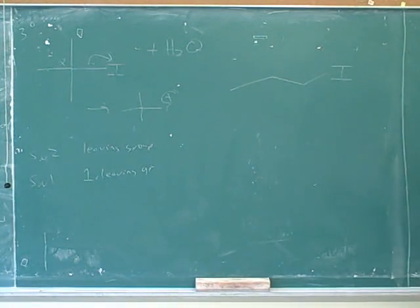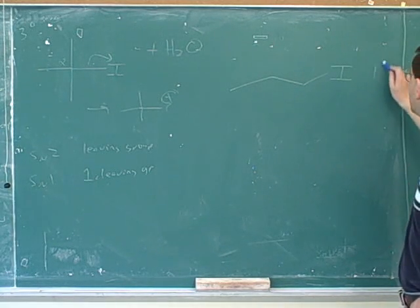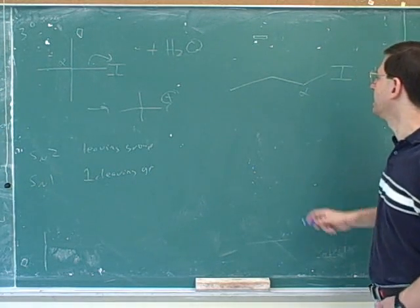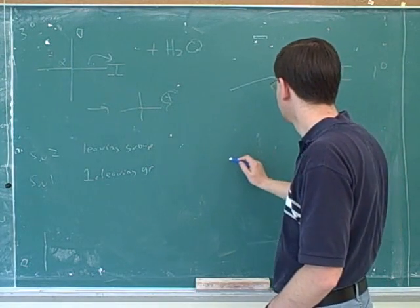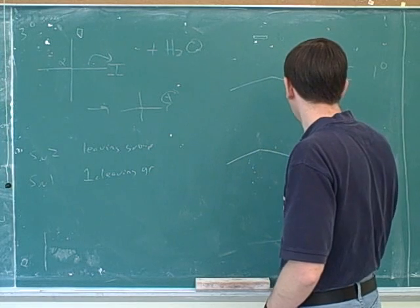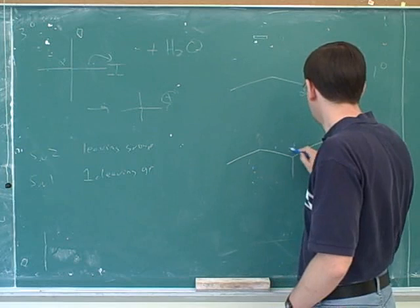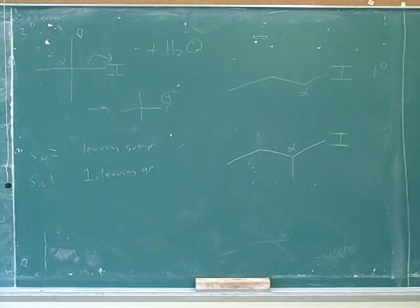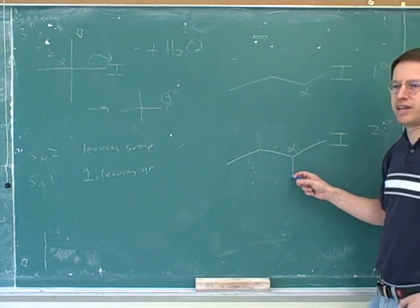So, would this alpha carbon be primary, secondary, or tertiary? Primary. Because here's the alpha carbon, and it's attached to one other carbon chain. When you're ready, how about this alpha carbon? It's going to be secondary. Because it's attached to two carbon chains. Notice it doesn't matter that one of the carbon chains is longer than the other. You just count how many carbon chains the alpha carbon is attached to.